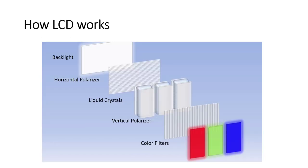In LCD displays a cold cathode fluorescent lamp, commonly known as CCFL, is used as a backlight. The vertical, horizontal, and vertical polarizers allow light of a certain orientation to pass through, and the liquid crystal in between can change the orientation of light passing through it. The combined effect of the polarizers and liquid crystal determines how much light passes at each screen location. Three color filters in front of every pixel convert white backlight into a specific color by letting a particular wavelength pass through, and together they produce color for each pixel.